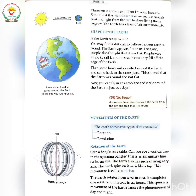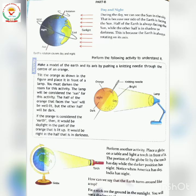During the day we can see the sun in the sky. That is because our side of the Earth is facing the sun. Half of the Earth is always facing the sun while the other half is in shadow or darkness. Jo humari side hai woh sun ko face kar rahi hai, aur prithvi ka adha bhag sun ko face kar raha hai jabki doosra half andheron mein hai.